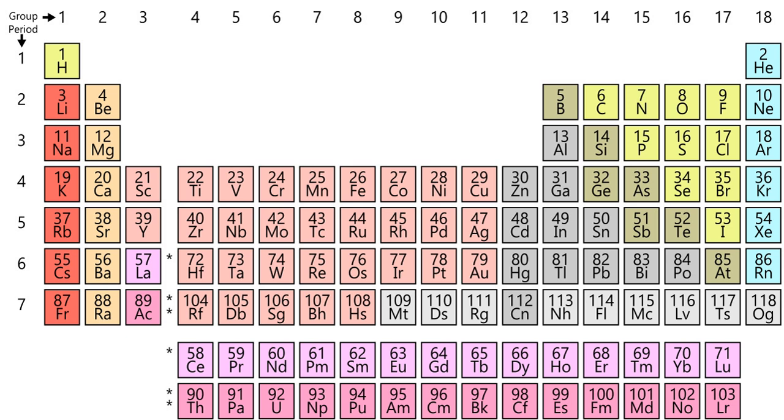Seven periods of elements occur naturally on Earth. For period 8, which includes elements which may be synthesized after 2016, see the extended periodic table. A group in chemistry means a family of objects with similarities. There are seven periods, going horizontally across the periodic table.